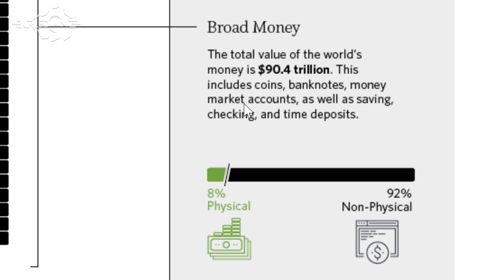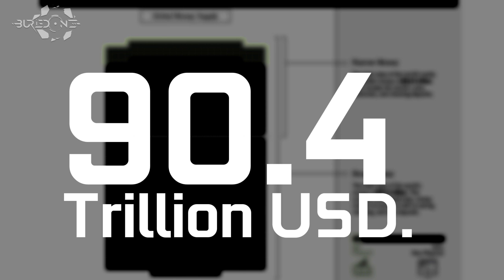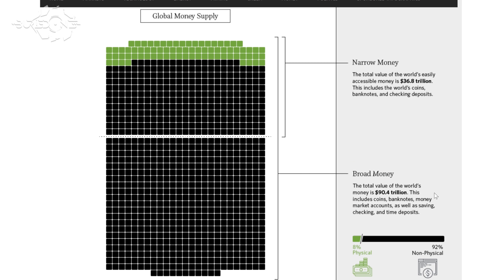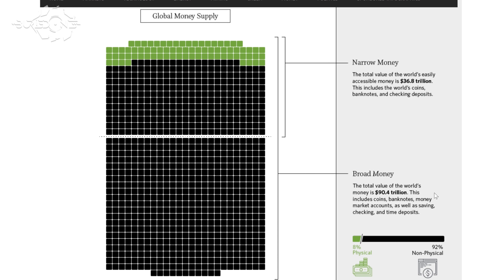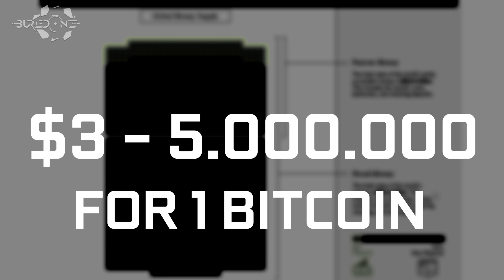There is 90.4 trillion US dollars in broad money. The market cap of the entire crypto world is only around 200 billion. That is 450 times more than the current entire crypto world. So if you took the 90.4 trillion and put it all into Bitcoin and other cryptos, you can certainly look at three to five million US dollars on a single Bitcoin.